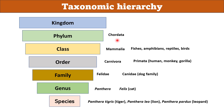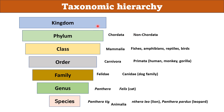Certain similar phyla come in the same kingdom. Phylum Chordata and Non-Chordata have huge differences — Non-Chordata do not have a notochord but Chordata do — but they have some similarities: all of them are animals. Hence they are in the same kingdom Animalia. In this way taxonomic hierarchy gets formed. Hope you enjoyed my lecture.